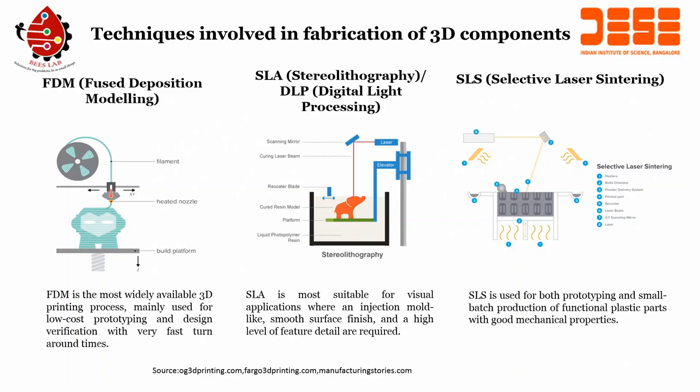There are three techniques generally used in 3D printing. First is fused deposition modeling (FDM), then stereolithography (SLA) or digital light processing, and finally selective laser sintering (SLS). FDM is the most widely used 3D printing process, mainly for creating low cost prototypes to verify designs. SLA is most suitable for visual applications requiring smooth surface finish and high level of features. SLS is used for both prototyping and small batch production of functional plastic parts with good mechanical properties.